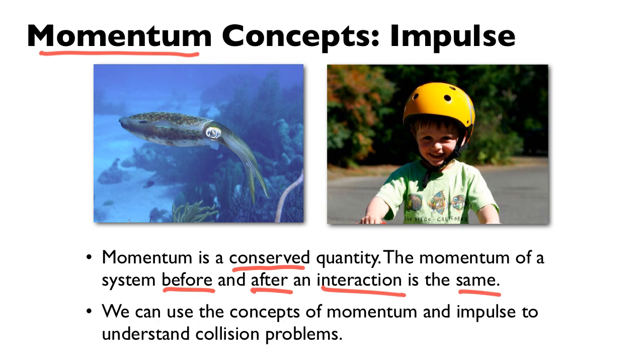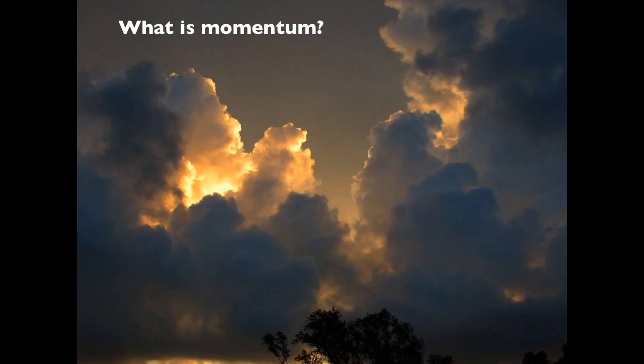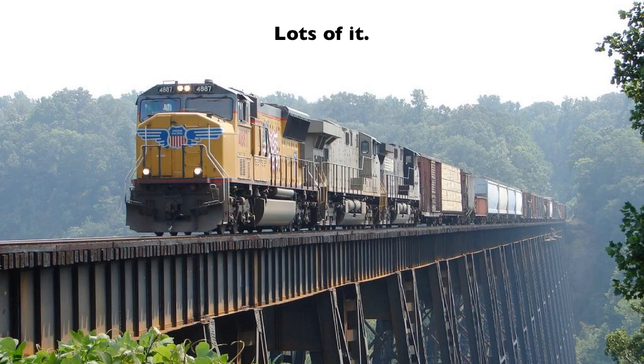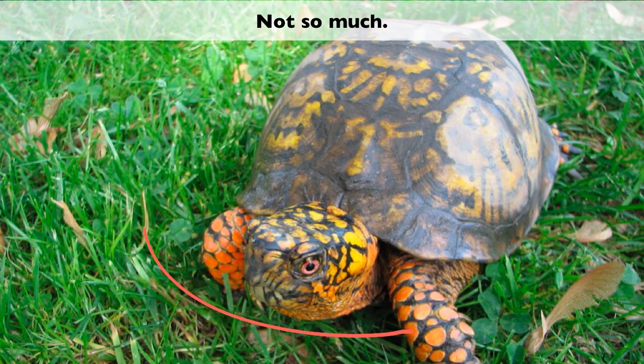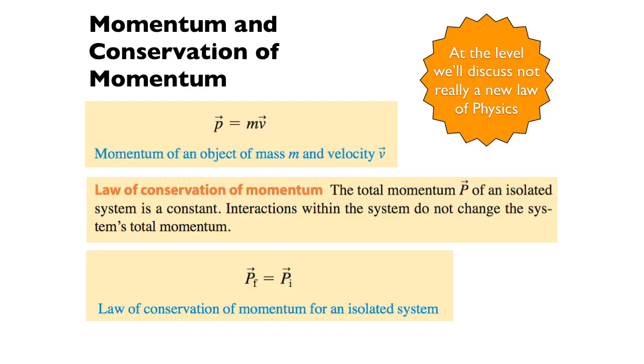The first momentum concept we'll look at is one called impulse. Now first, I want to talk about what is momentum. If you have big objects that are moving fast, you have a lot of momentum. If you have small objects that are moving slow, you have not so much. The definition of momentum is just the product of the mass times the velocity.